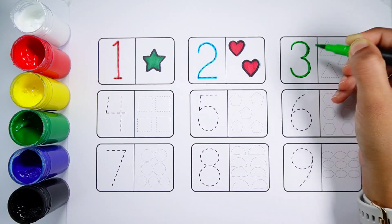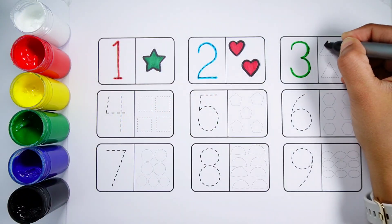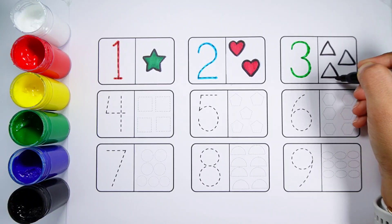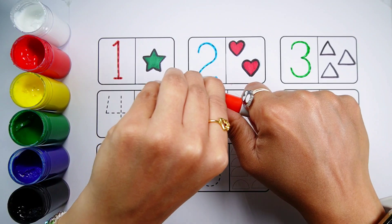Number 3. One, Two, Three. Three Triangles. Orange Color.